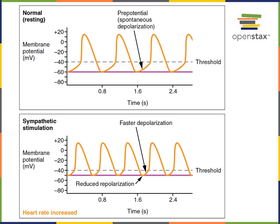Here we see a comparison of the contractile cell action potential at rest versus with sympathetic nervous system stimulation. The slope of the pacemaker potential, or pre-potential spontaneous depolarization, is increased, causing the membrane potential to reach threshold more quickly, stimulating an increased heart rate.